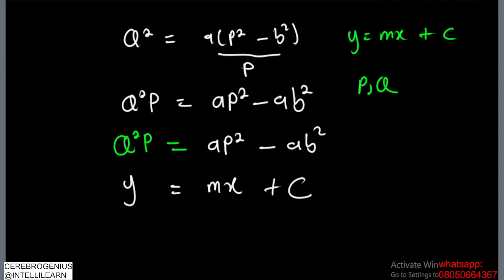So what does this mean? This means that we are going to plot graph of y against x. Now what's standing in place of y? That's q squared p. What's standing in place of x? That is p squared. So you are plotting graph of q squared p against p squared.